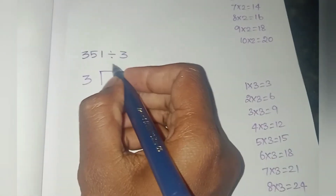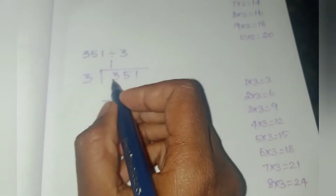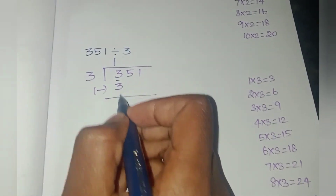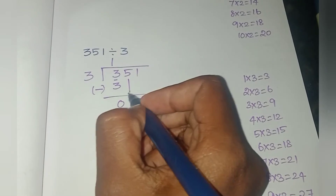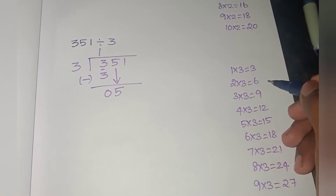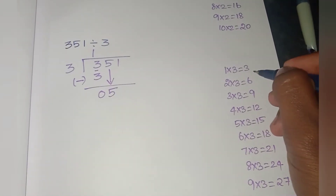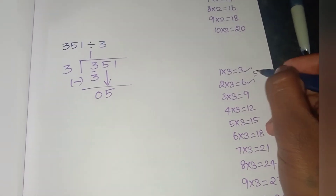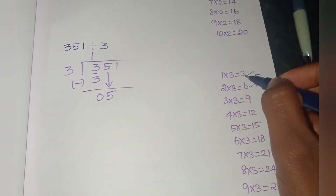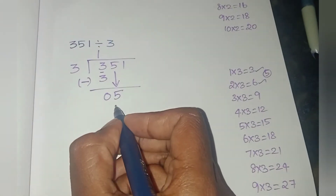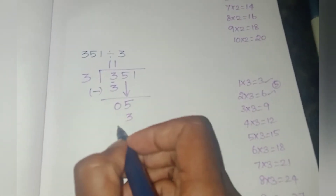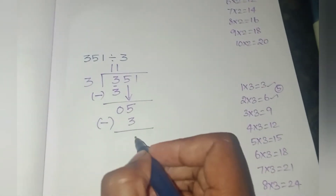So, 3 ones are 3. 3 into 1 is 3. Next, what is the next step? Subtraction. 5 minus 3 equals 2.